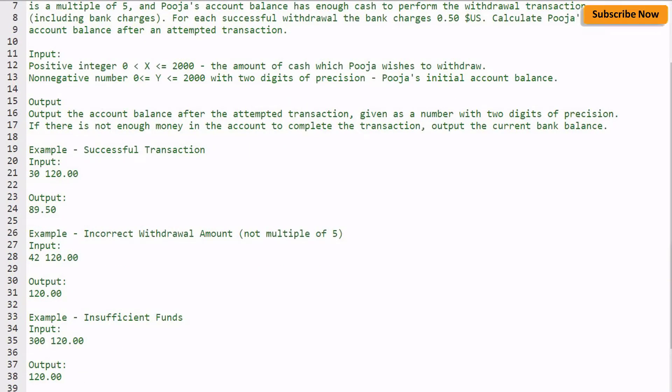Now let's see the last example of insufficient funds. Here X entered is 300 and the initial amount was 120, so the transaction will not happen because there's less amount in the account balance. The output will again be the initial amount.